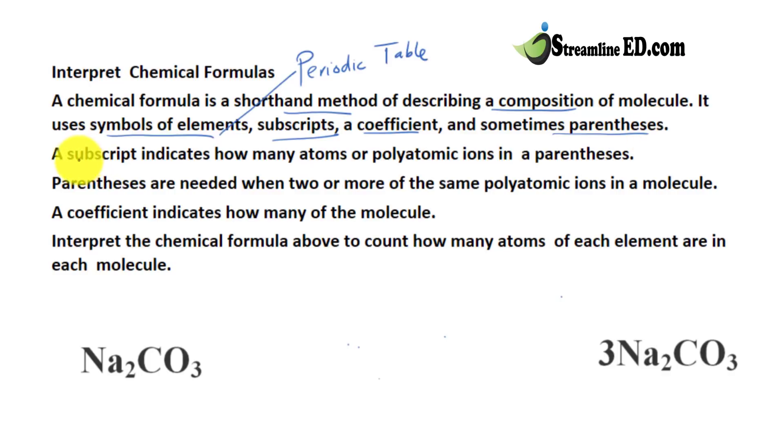Let's review. A subscript, if we look at this chemical formula here, we have a subscript 2 and 3, which indicate how many atoms or polyatomic ions in the parentheses. We're going to look at the example of each in our example below. Then we have parentheses which are needed when two or more of the same polyatomic ions in the molecule. Lastly, we have the coefficient.